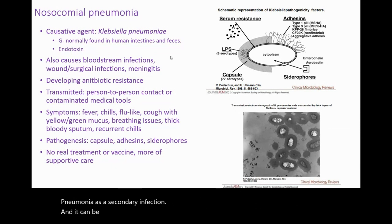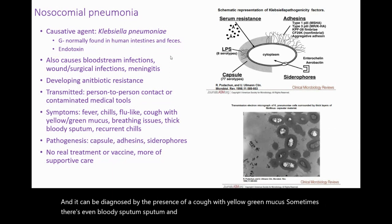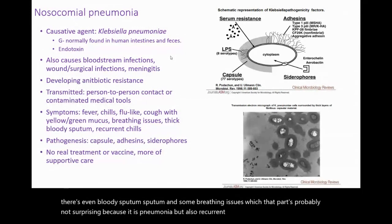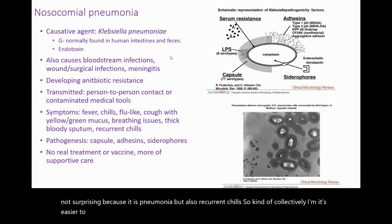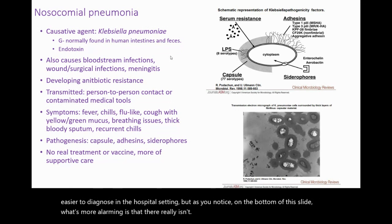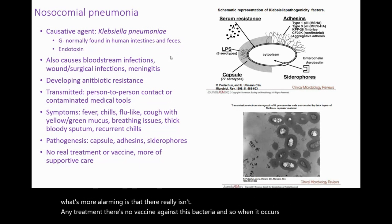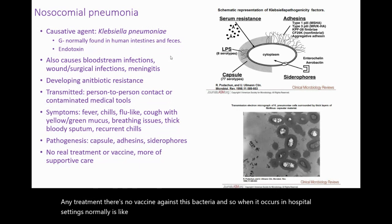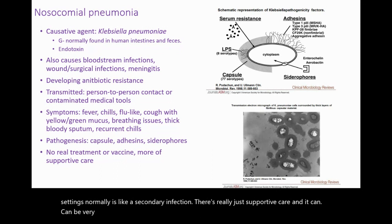It can be diagnosed by the presence of a cough with yellow-green mucus, sometimes bloody sputum, breathing issues, and recurrent chills. What's more alarming is that there really isn't any treatment and no vaccine against this bacteria. When it occurs in hospital settings as a secondary infection, there's really just supportive care, and it can be very dangerous depending on what the primary infection was.